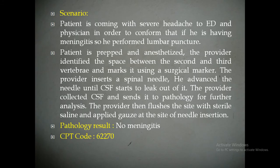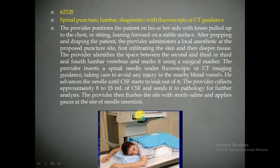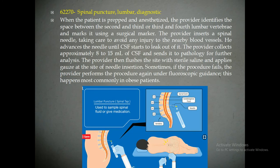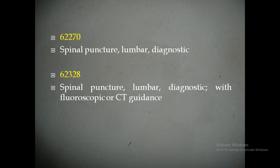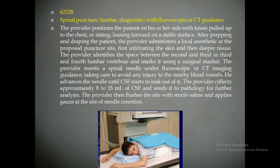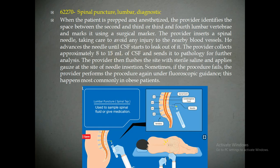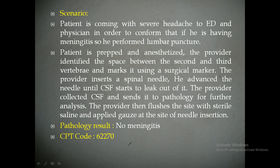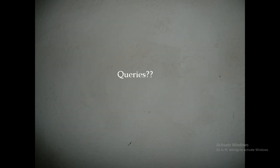Lumbar puncture is a common procedure in the emergency department to rule out conditions and sometimes to treat conditions. In diagnostic lumbar puncture: with imaging guidance we code 62328, and without imaging guidance we code 62270. The method is the same: a spinal needle is inserted, CSF is removed and collected in a tube, and sent to pathology to rule out the condition. If you have any queries please comment below, thank you.